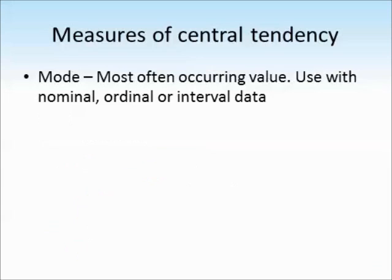And the last measure of central tendency that you need to know is the mode. And this is the most commonly occurring value. So you can use this with nominal, ordinal or interval data. So if we look at this data set here we can see that 6 is the most frequently occurring value. So that would be the mode.